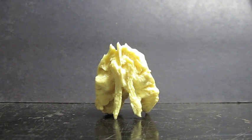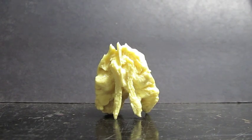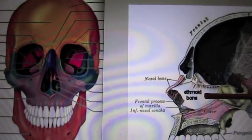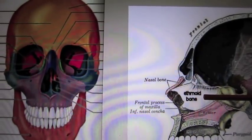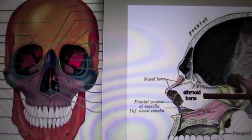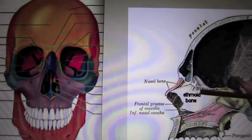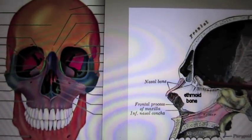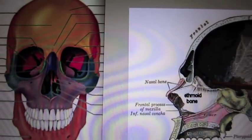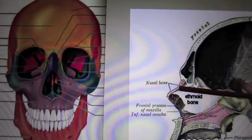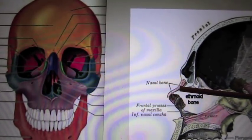The ethmoid is one of the seven bones that make up the orbit. The ethmoid bone is located anteriorly and inferiorly to the frontal bone, forming part of the cranial floor, posterior to the nasal bone, between both of the orbits.